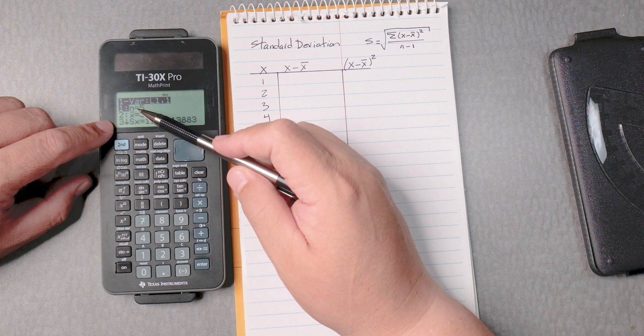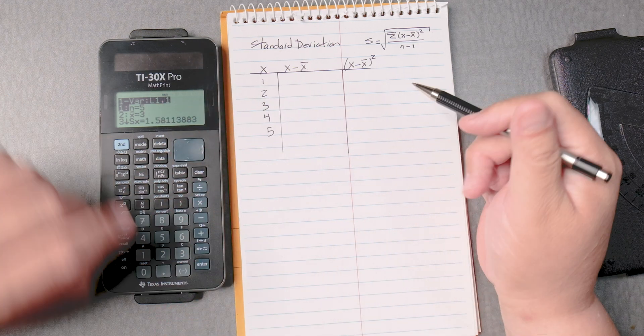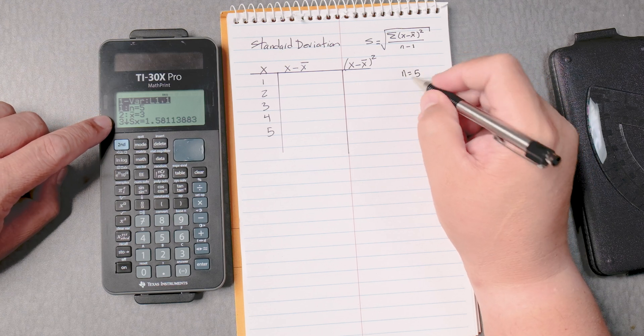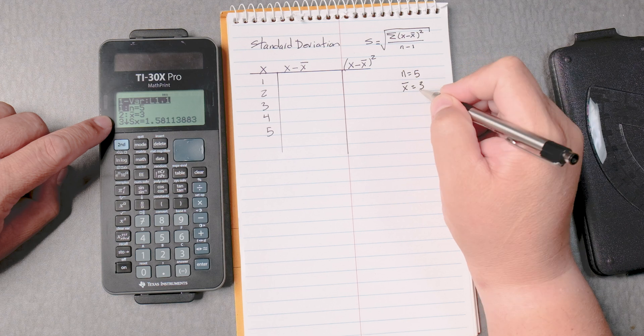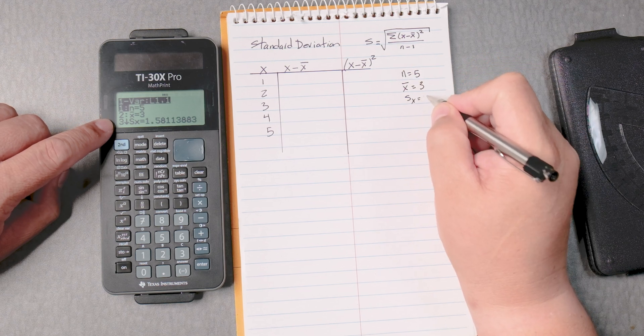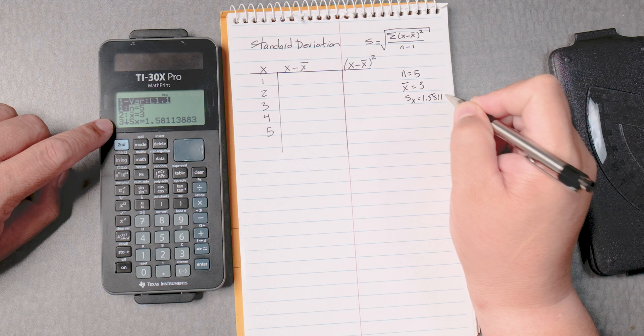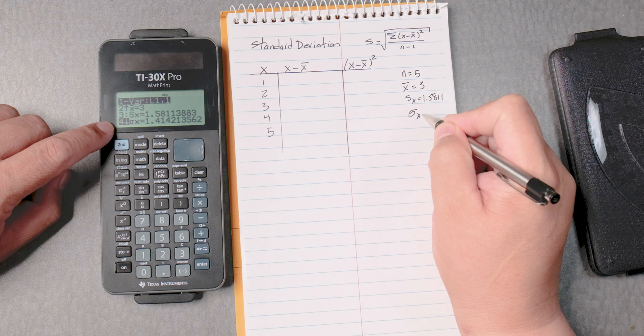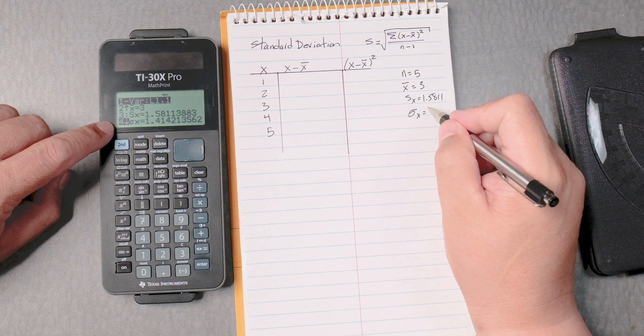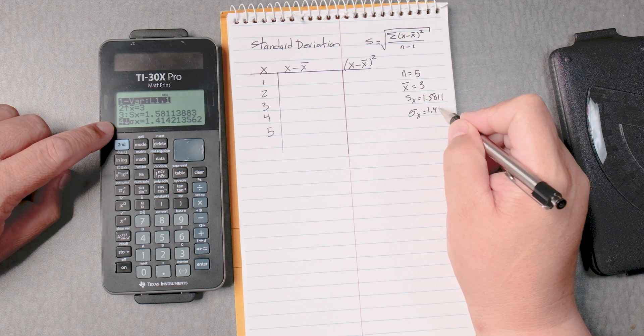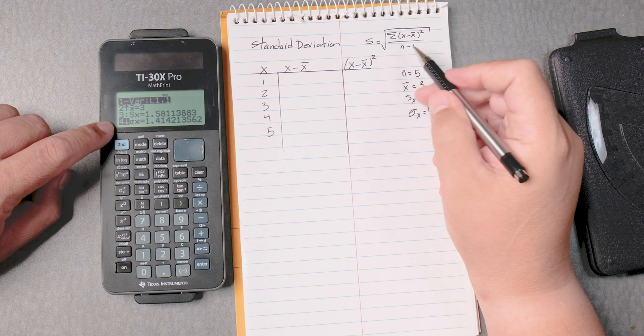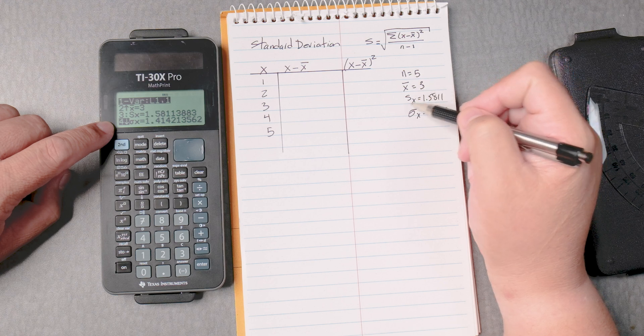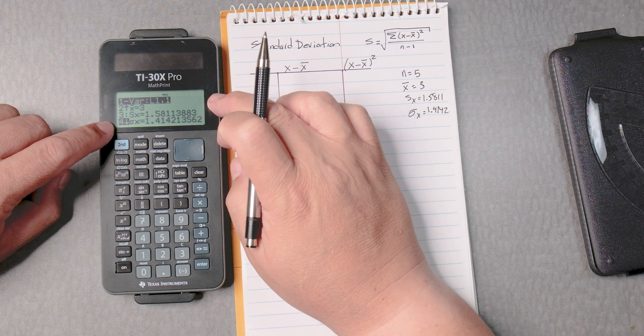As you can see, n is equal to 5. And so n is equal to 5, so this is from the calculator. X bar is 3. The standard deviation, which is what we want, is 1.5811. And if we scroll down more, we can find also sigma x, which is not this video, but if you need it, sigma x is the population standard deviation, which is a very similar formula. Instead of n take away 1, it would just be n. So you found the mean and the standard deviation on the TI-30X Pro.